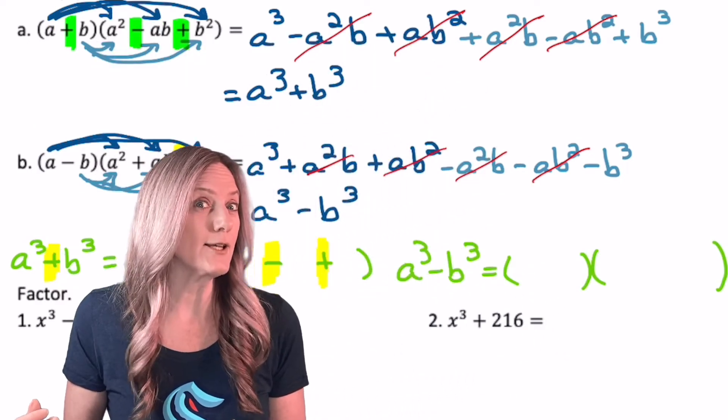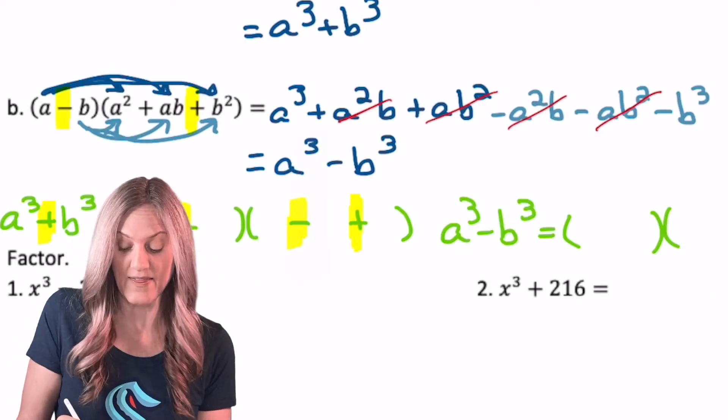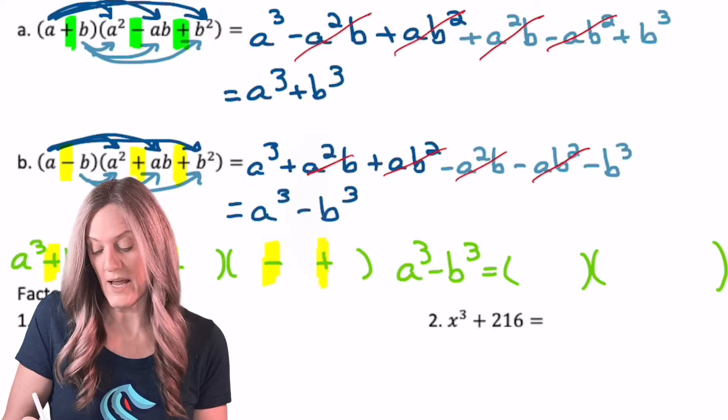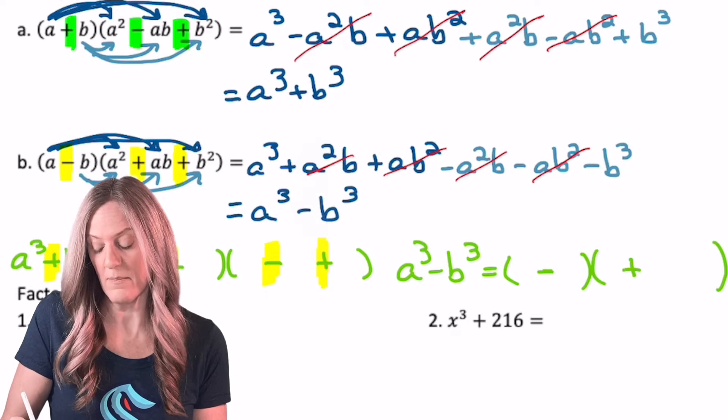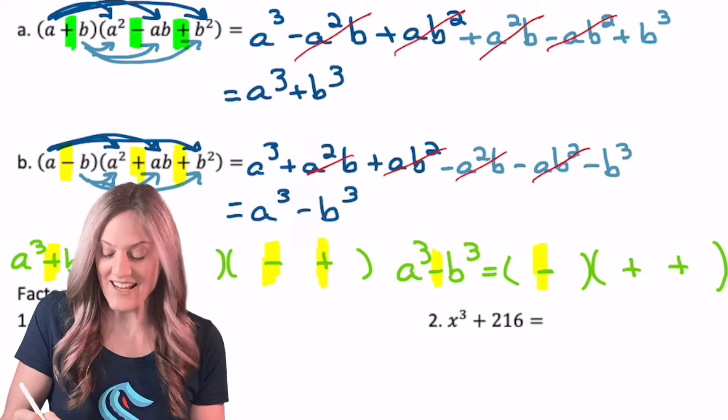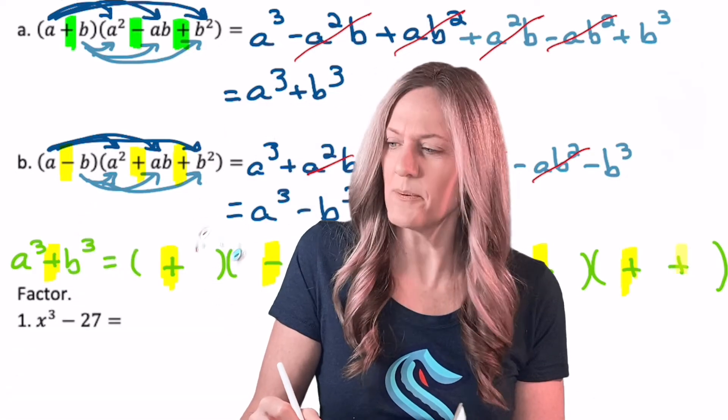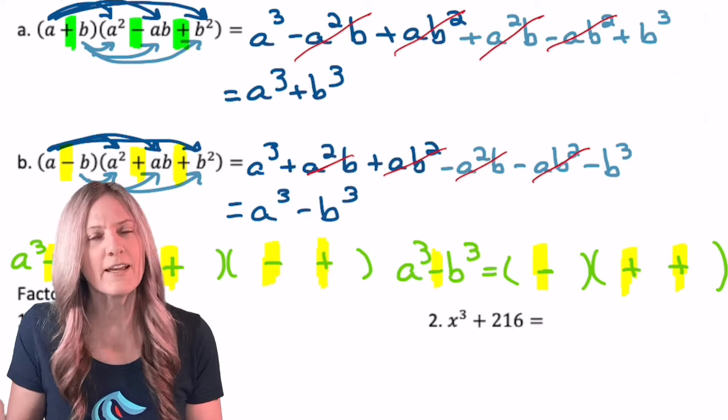Let's take a look at a cubed minus b cubed. Noticing that we had a minus, and then a plus, and a plus. So minus, and then a positive, and a positive. Well, that once again is same, opposite, always positive. I feel like it's SOAP.